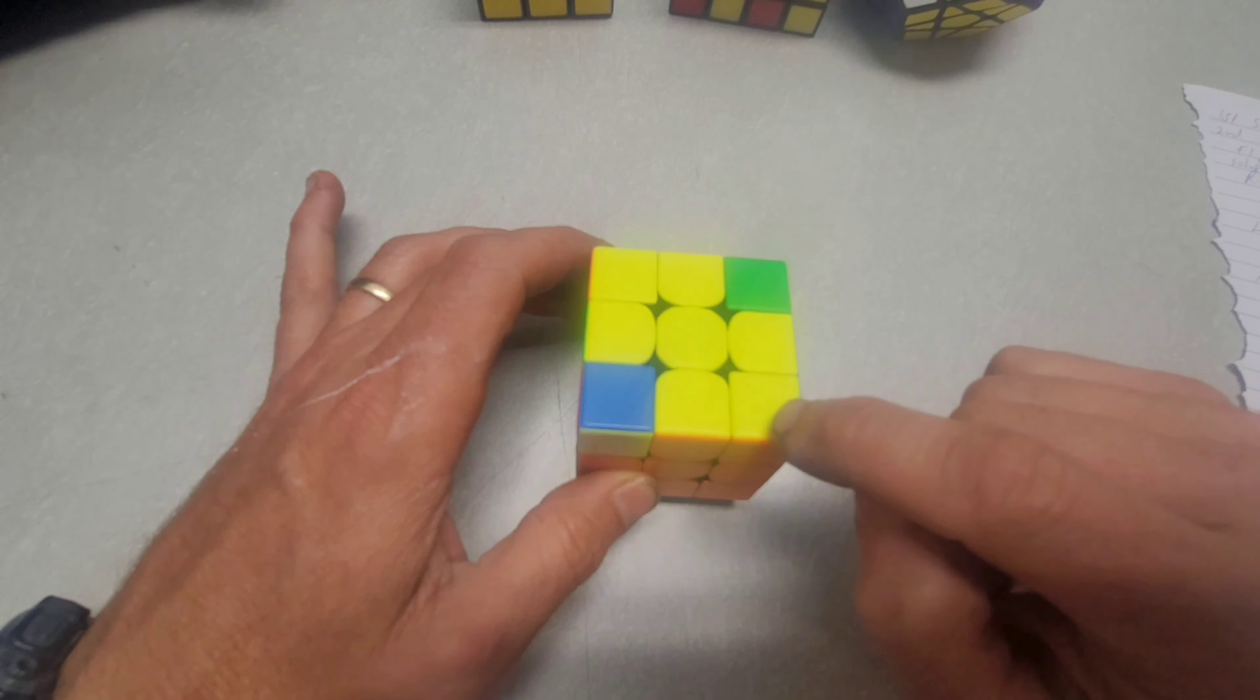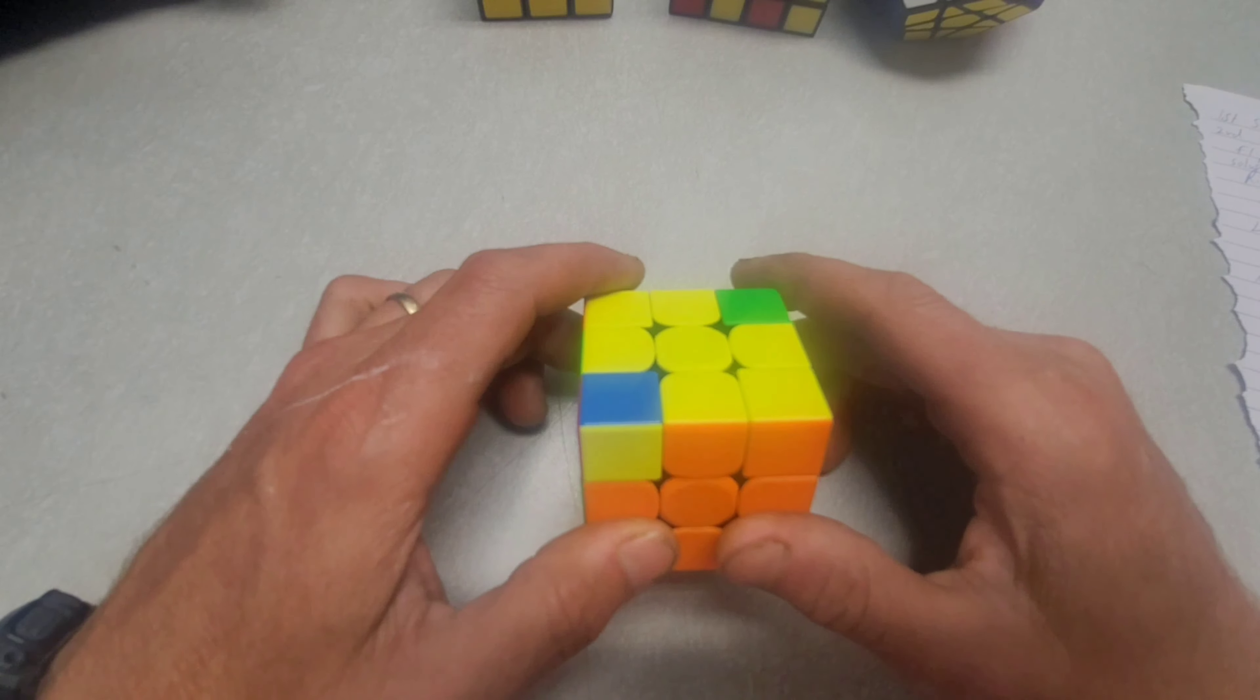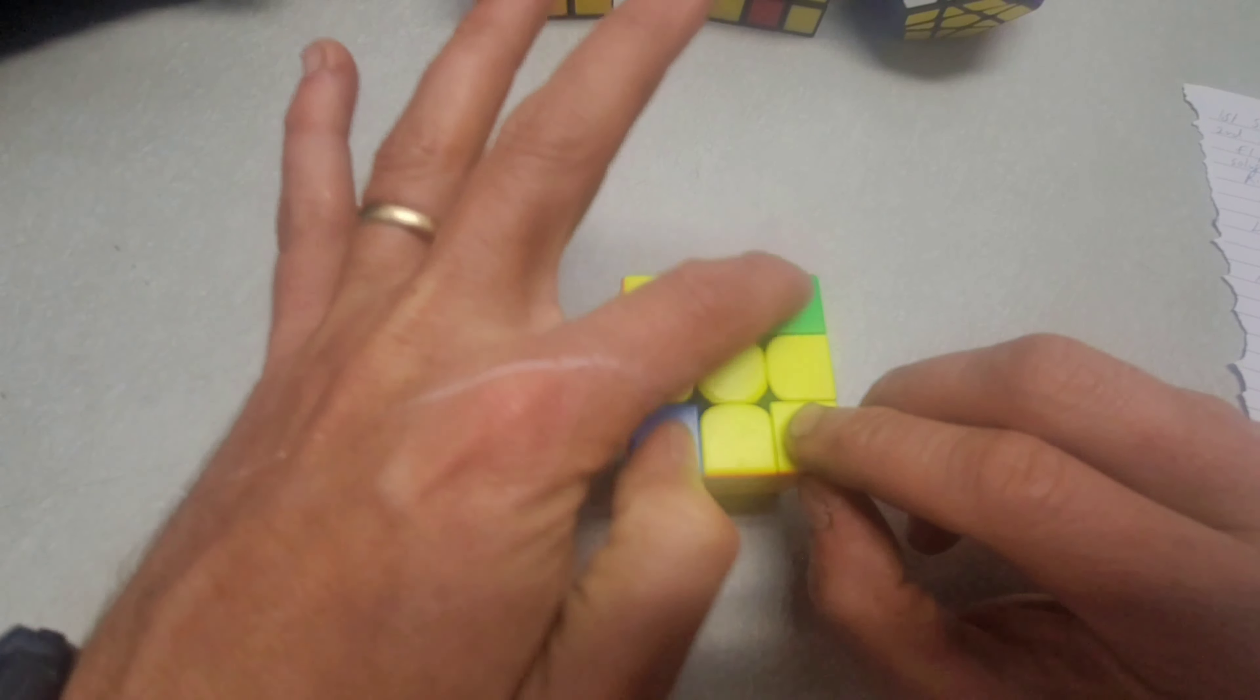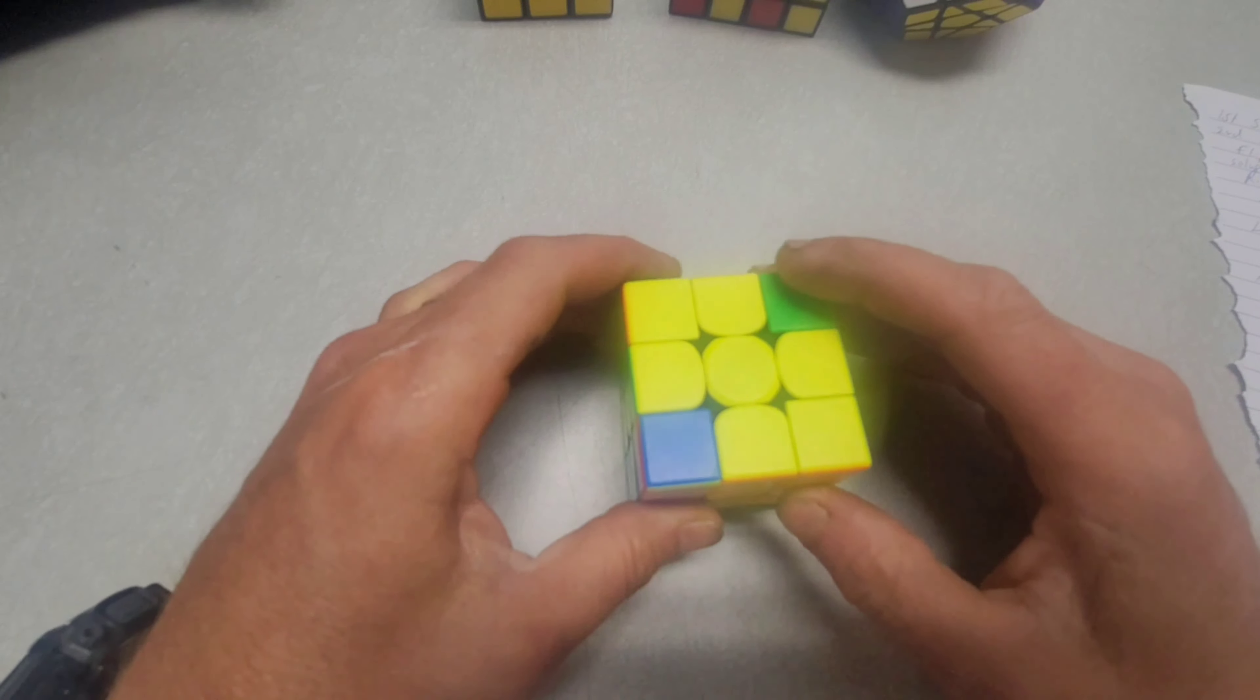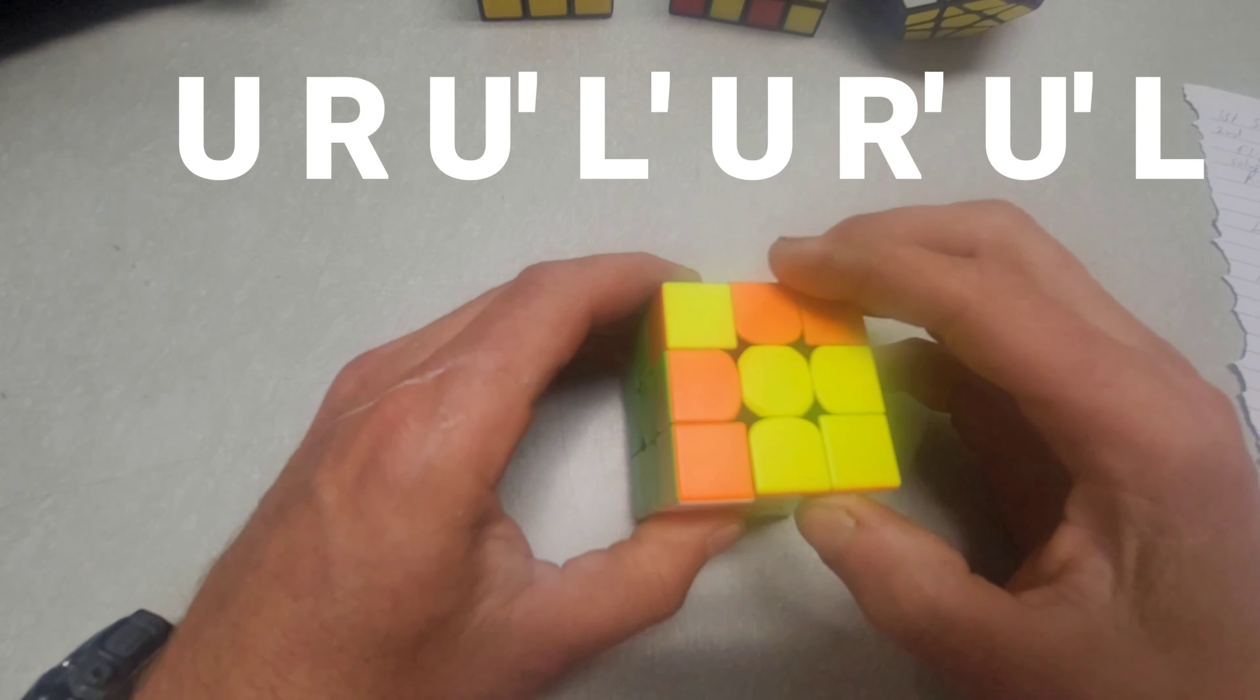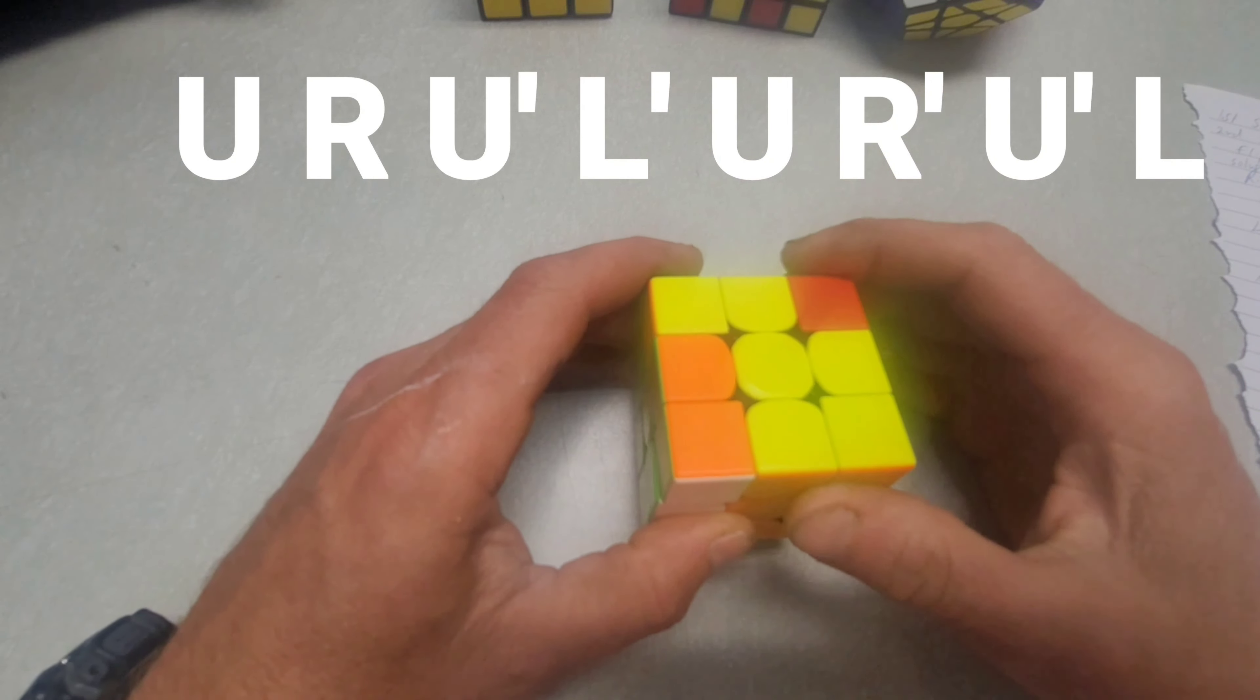So what I'm going to do is going to put the one that's right on the right side right here on the corner here. And we're going to do this algorithm. What it's going to do basically is going to keep this one steady and it's going to rotate these three around until they get in the right spot. Okay, so this algorithm is up, right, up prime, left prime, up, right prime, up prime, and left.